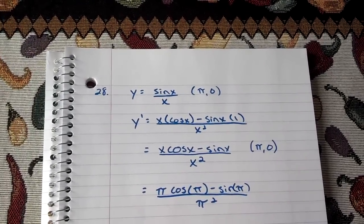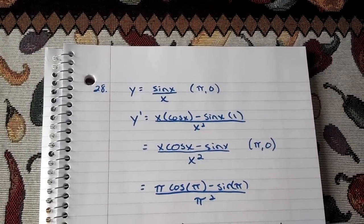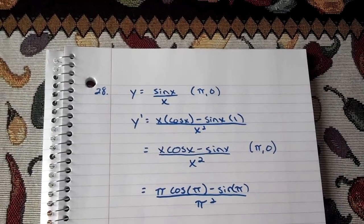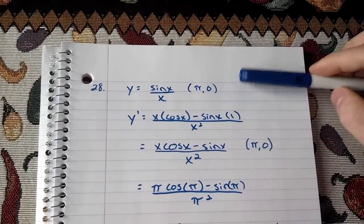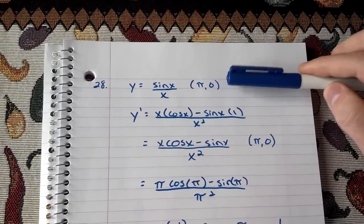Okay, so today we're going to be finding the tangent line given the point in this equation, y equals sine x over x. The point that we're given is pi, zero.